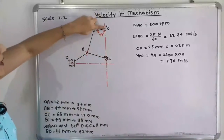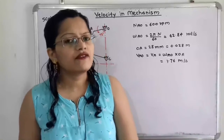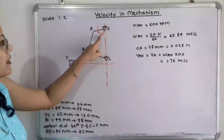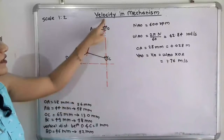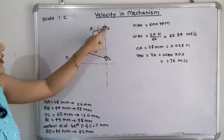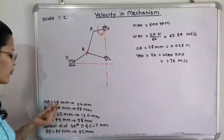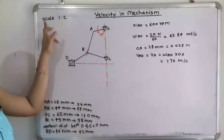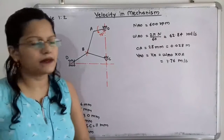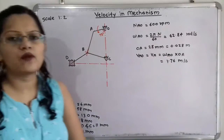With points O, C, and the horizontal slider path selected, we now draw the crank. The crank angle is 75 degrees from the vertical line, so we draw a line through point O at 75 degrees. The dimension of OA is 28 mm, but our scale is 1 is to 2, so we take 28 × 2 = 56 mm, that is 5.6 cm, and mark point A.